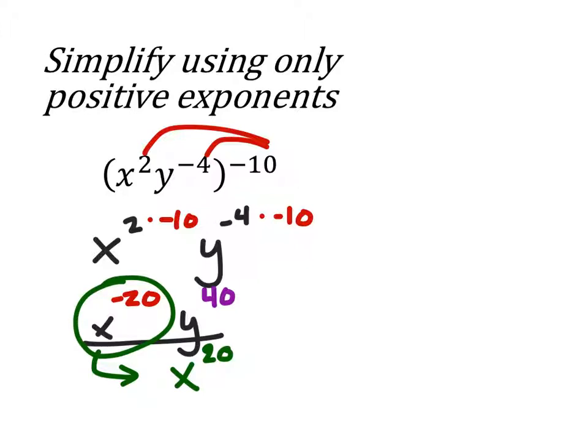It's kind of like this, we've got this line, and if this part of the expression crosses the line, then we change the sign of the negative 20.